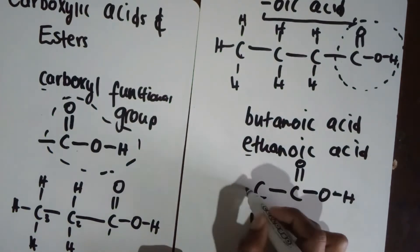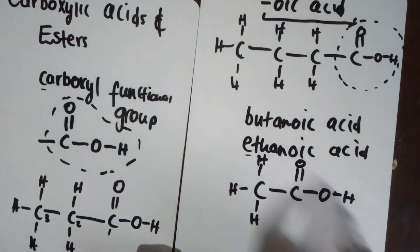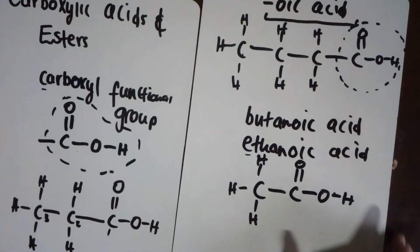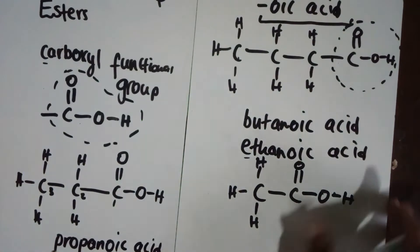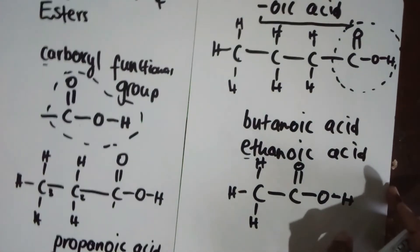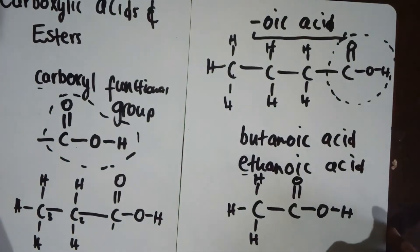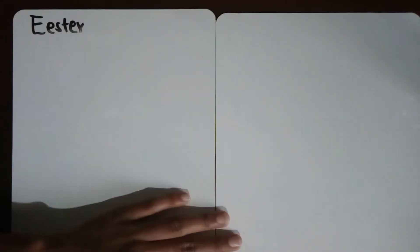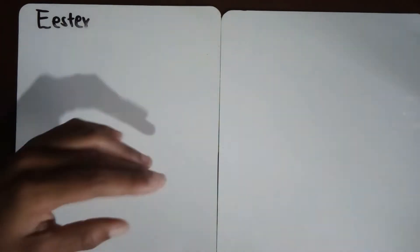Ethanoic acid has two carbons, a double bond to O, and then the single bond O-H, plus its hydrogens. They're pretty straightforward to name. Now we're going to move on and talk about esters — we'll define what esters are and how to identify them.